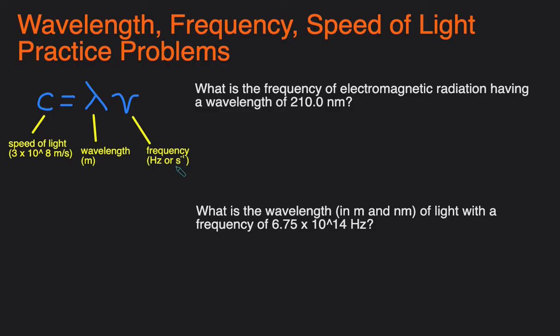So let's jump into some example problems. The first one: what is the frequency of electromagnetic radiation? Pretty much this just means light. So what's the frequency of light having a wavelength of 210 nanometers? So we're given the wavelength. Now let's actually rewrite the equation.